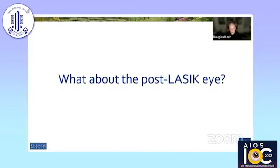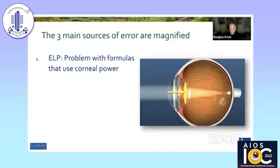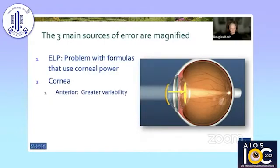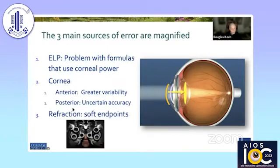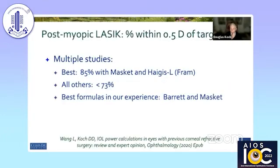Moving to two other topics — the post-LASIK eye. The three main sources of error are all magnified here: the ELP problem, because some formulas use corneal power to calculate ELP; corneal measurements are problematic due to greater variability of the anterior cornea and uncertain accuracy of the posterior cornea; and refraction has soft endpoints in these patients. Ideally we want 90% within a half diopter, but in the literature there's one small study at 85% and every other one is less than 73%. We find Barrett and MASCA to be the best in our hands.